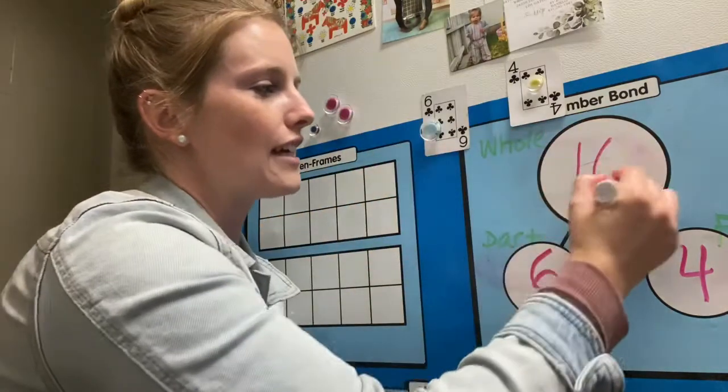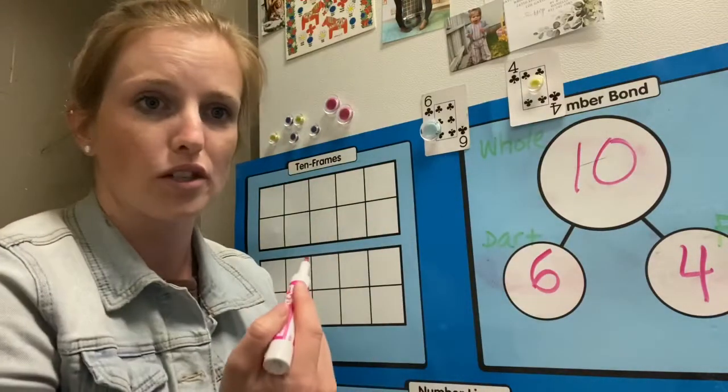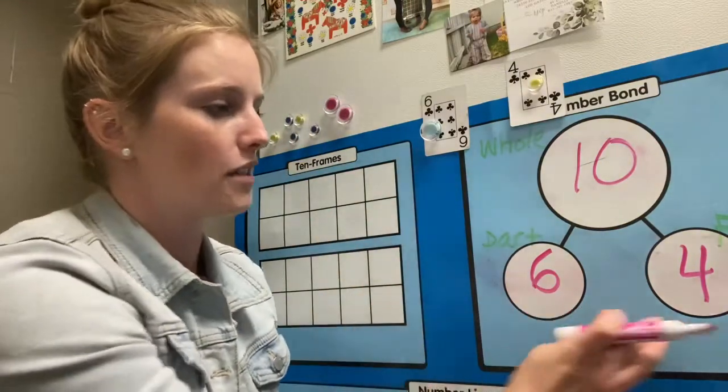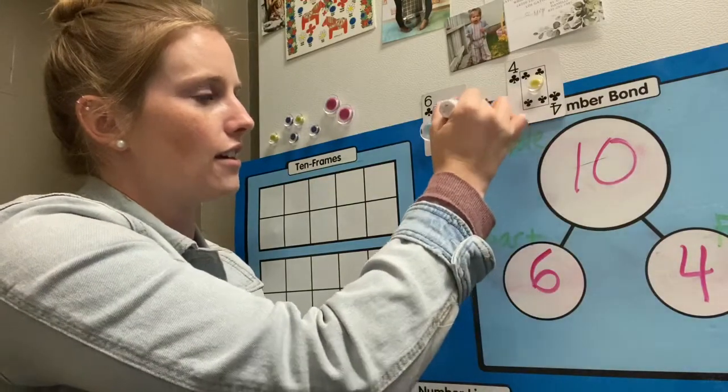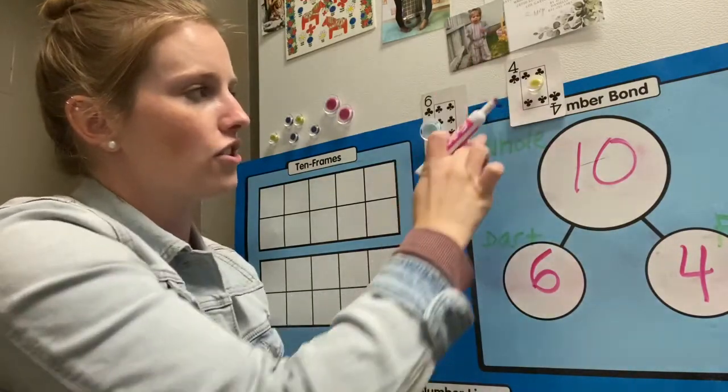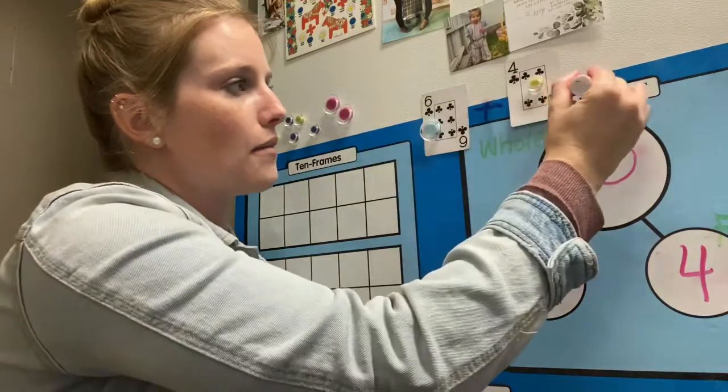Good job. So the whole is ten. And you can have your students practice writing six plus four is the same as ten. So I could do it here. I don't want to write on Miss Beat's fridge. Six plus four is the same as ten.